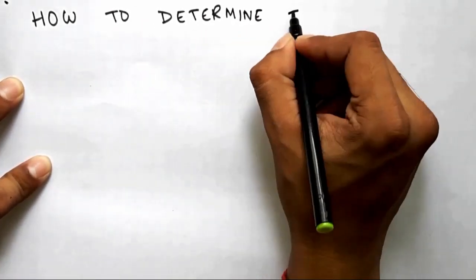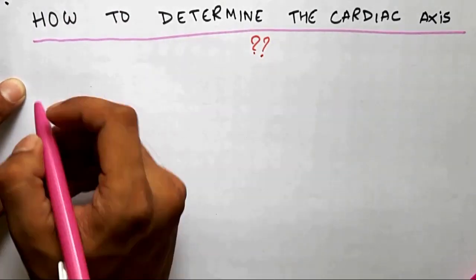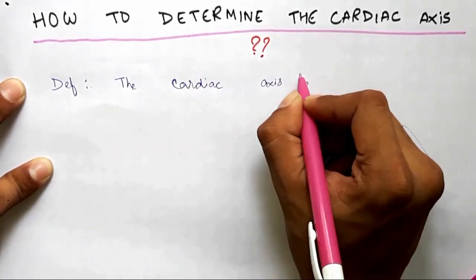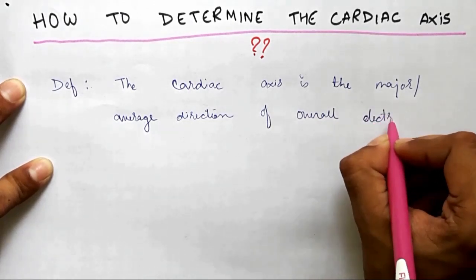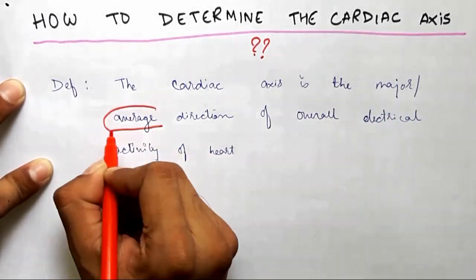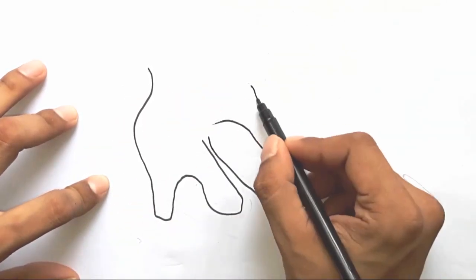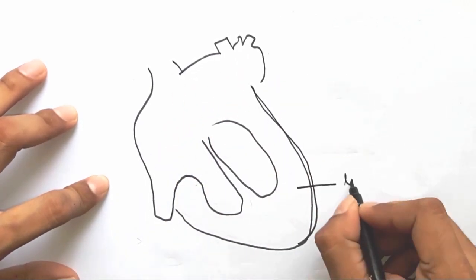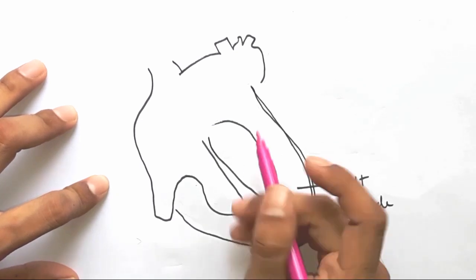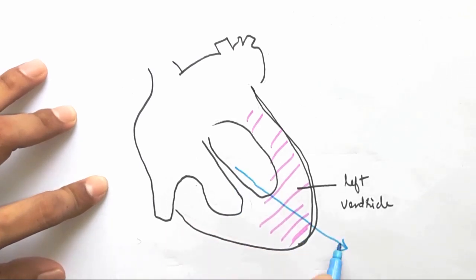How to determine the cardiac axis. The cardiac axis is the major or average direction of overall electrical activity of the heart — importantly, it is an average. The left ventricle is a larger, more muscular organ because it supplies blood to the rest of the body, so the electrical activity is more shifted towards the left ventricle, which is known as the net electrical axis.